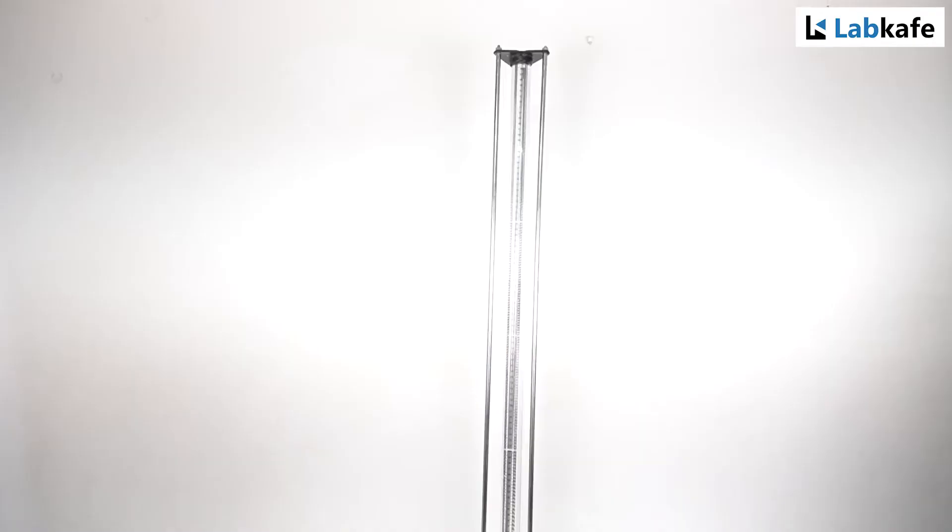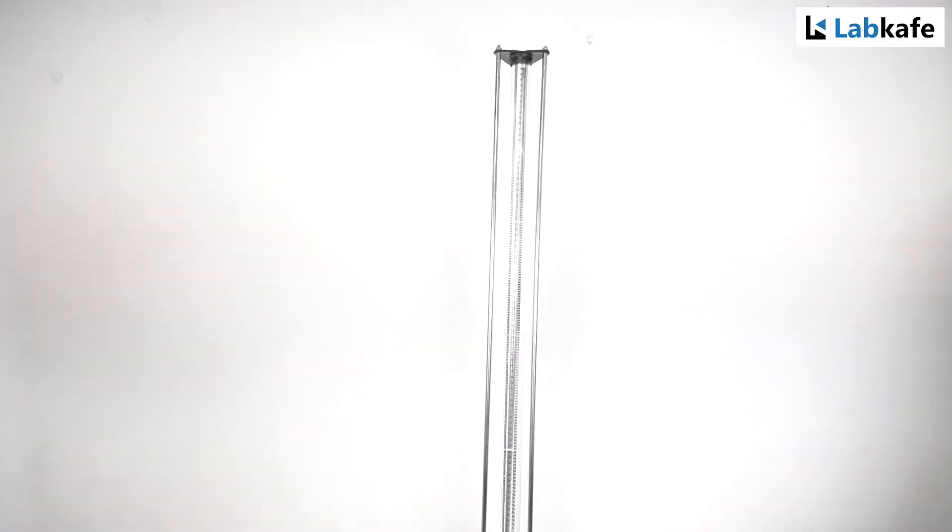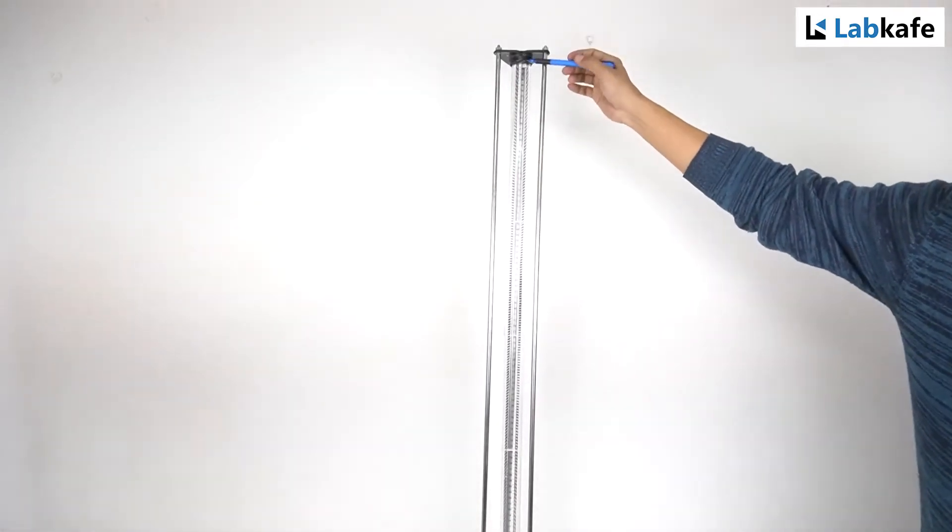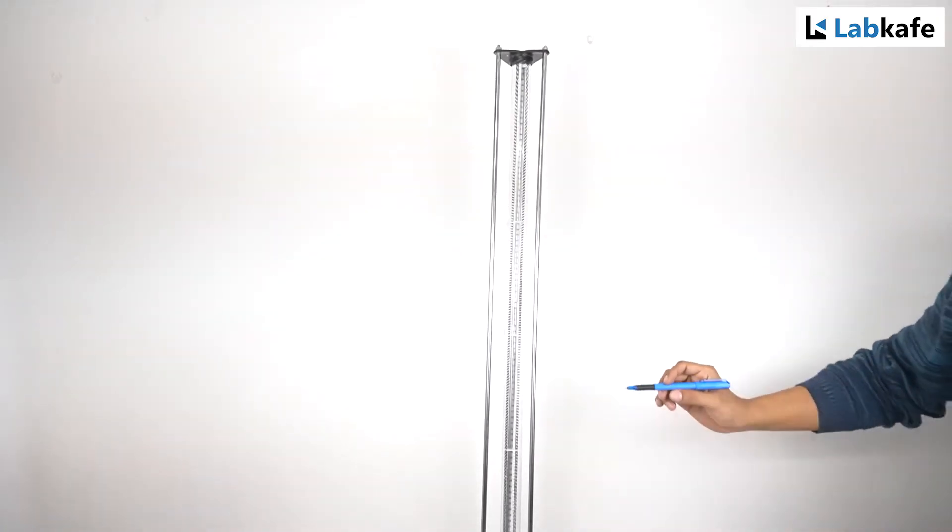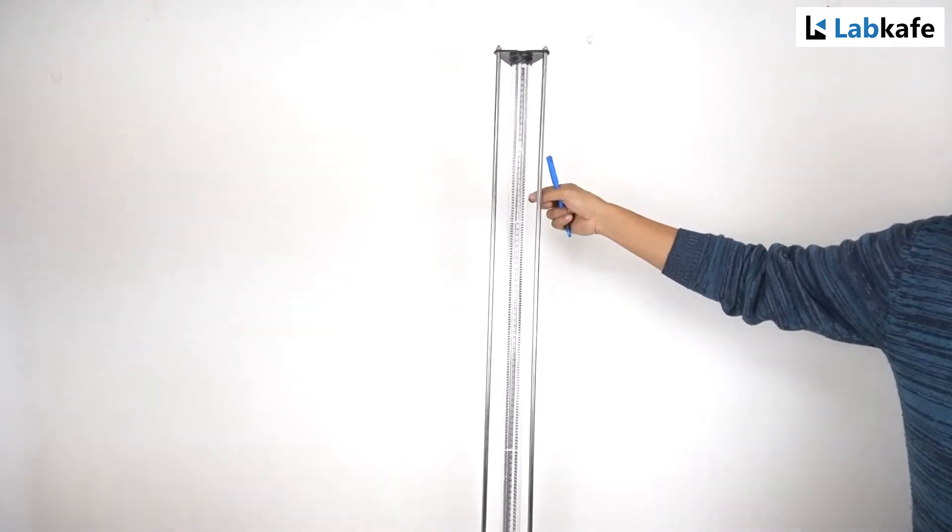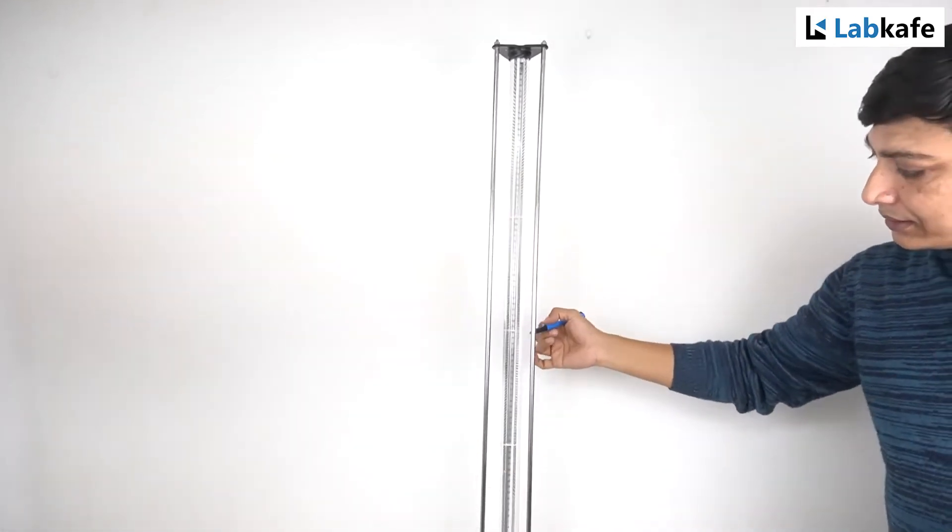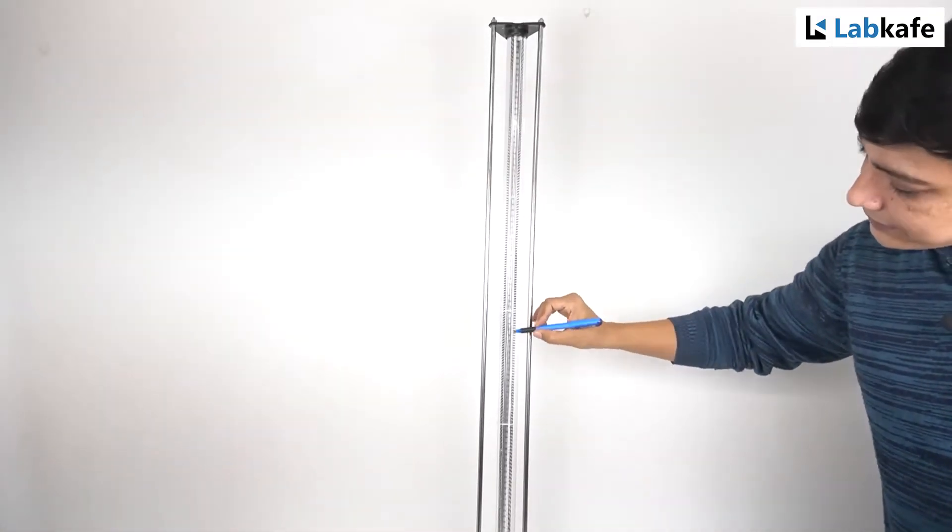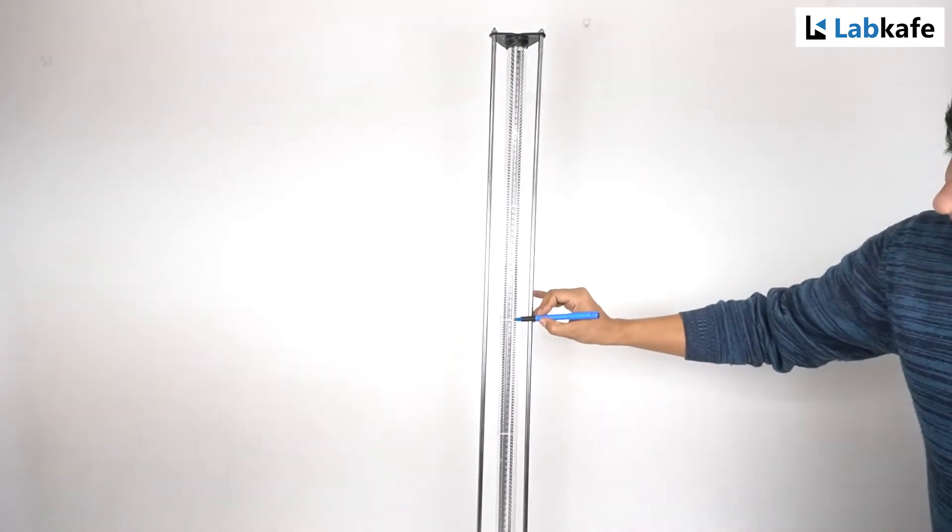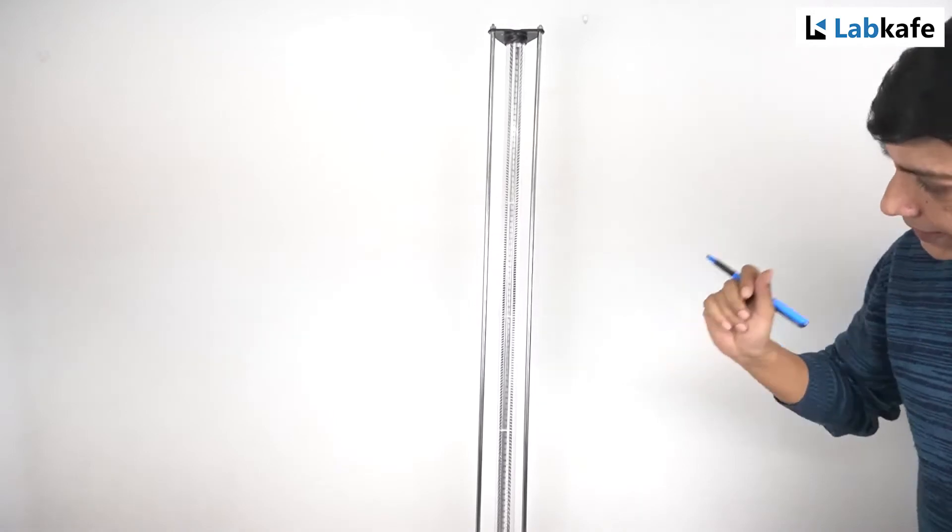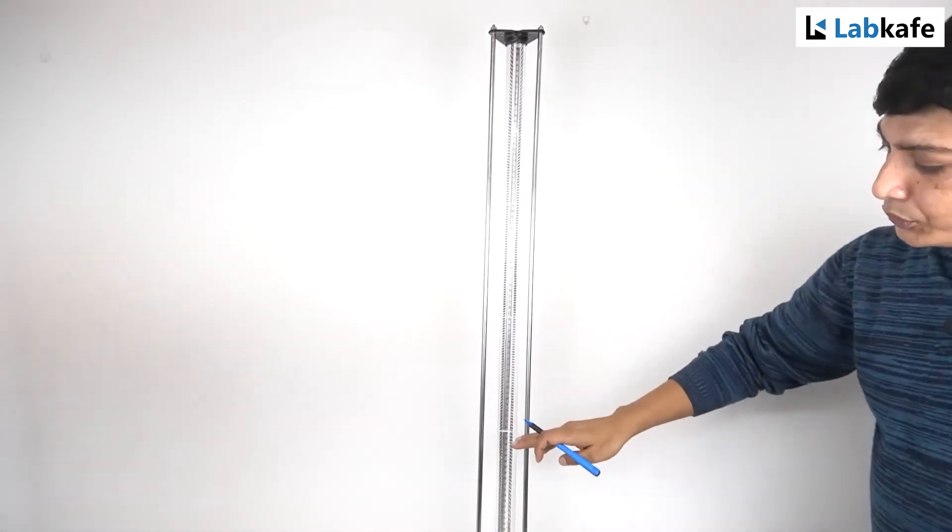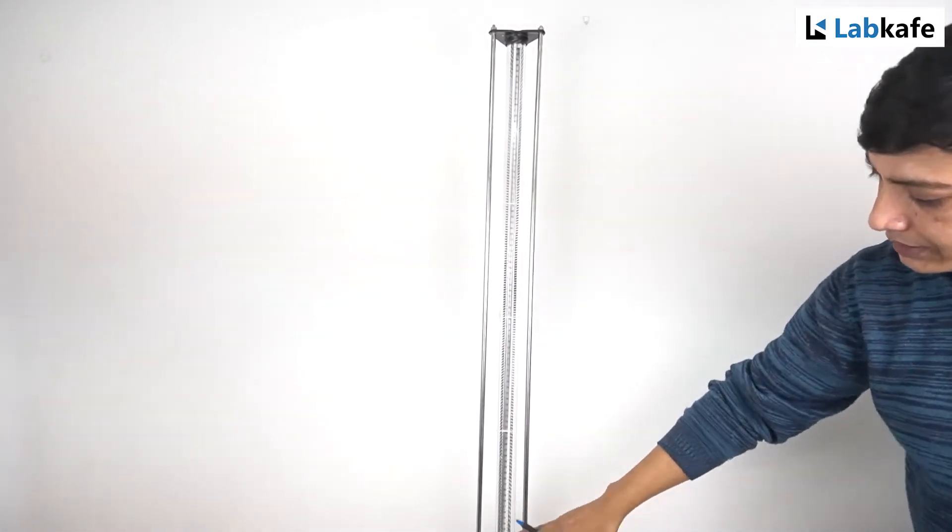This is a Stokes law apparatus or viscosity apparatus. It has an acrylic tube having 100 centimeters of length, and we have filled glycerin as the viscous liquid inside it. I have tied three different threads on three different scales. The first one I placed on 70, second on 50, and third on 30 centimeters. I have left at least 20 centimeters above the first point and at least 10 centimeters below the last point.